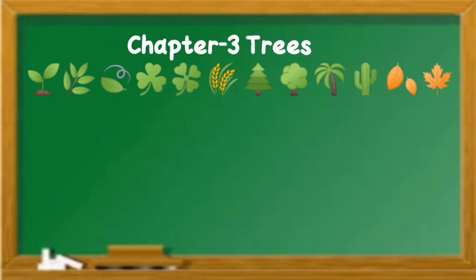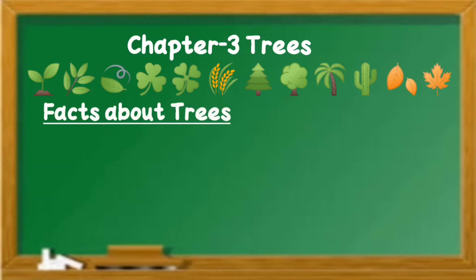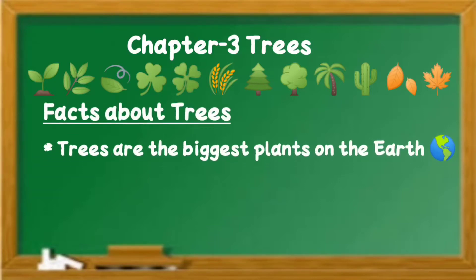Before we begin our discussion, let's know some facts about trees. Trees are the biggest plants on this earth. All plants are classified into 5 types: trees, herbs, shrubs, climbers, and creepers. Among these, trees are the largest and biggest plants on this earth.